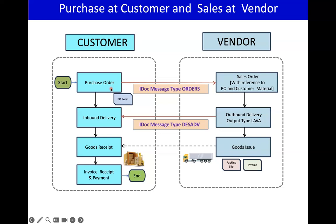Whenever you see a sales order, the purchase order number will also be there. I'm going to show this in the system — where you can see the purchase order number and in which table it is stored. The material here — the customer material — will be stored, and based on the customer material link, they create a customer info record. Everything will be available at the vendor side, but they will still use their own material code.